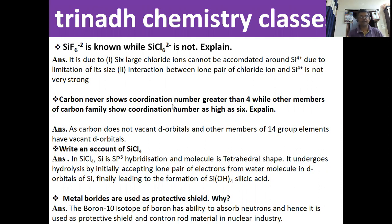The next question: carbon never shows coordination number greater than 4, while other members of the carbon family show coordination number as high as 6. In Group 14 elements, the reason is that carbon doesn't have vacant d-orbitals, whereas other members of Group 14 elements have vacant d-orbitals.